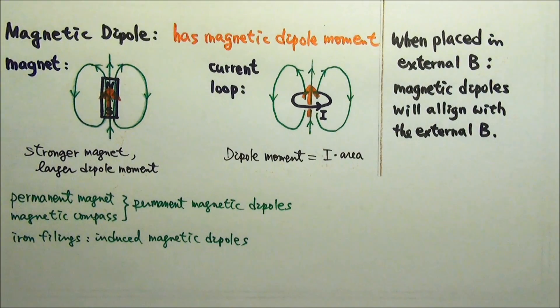For example, a permanent magnet like a magnetic compass is a permanent magnetic dipole, while iron filings can be induced to become induced magnetic dipoles.